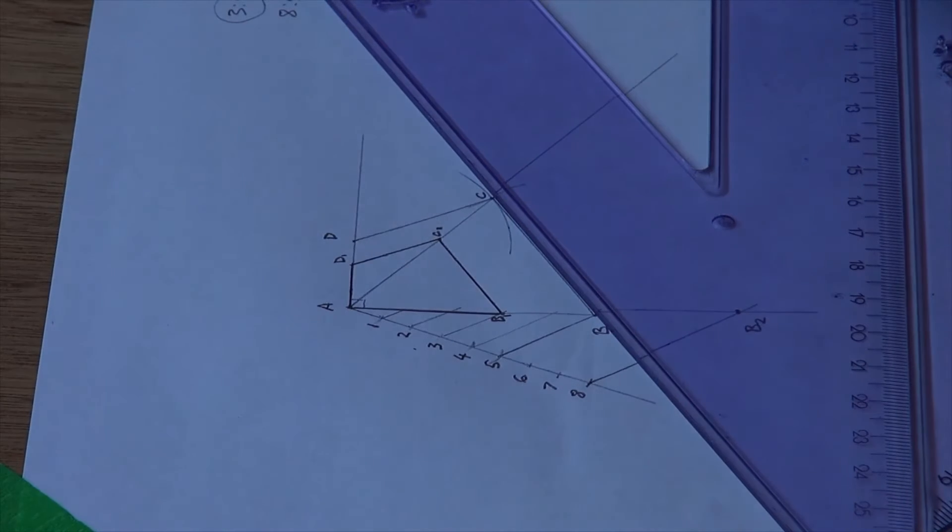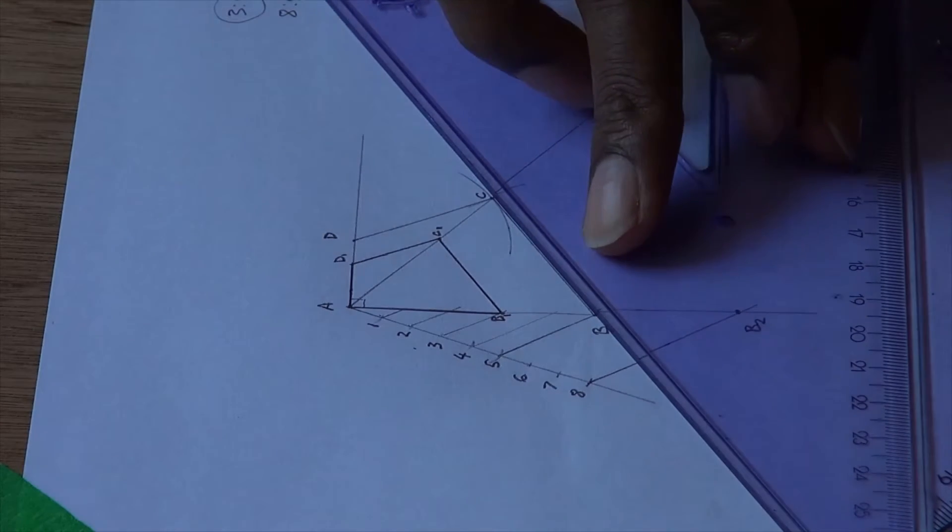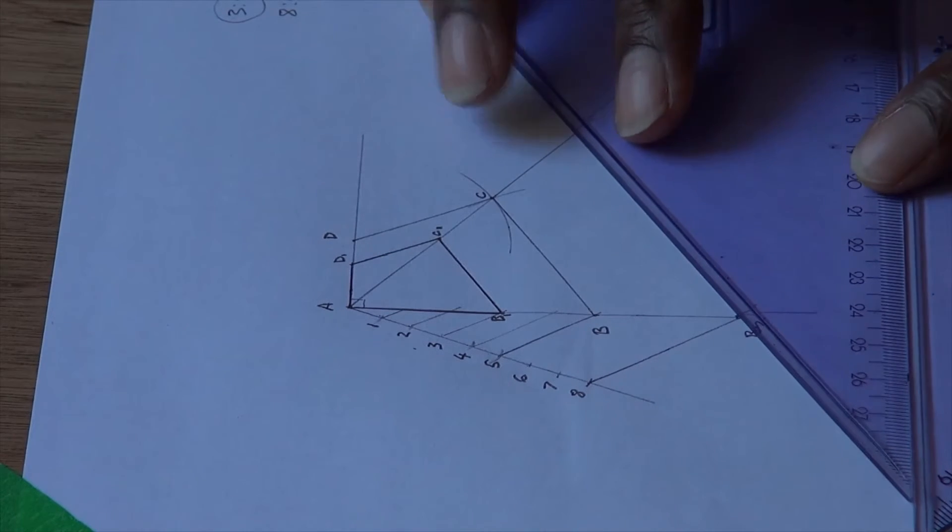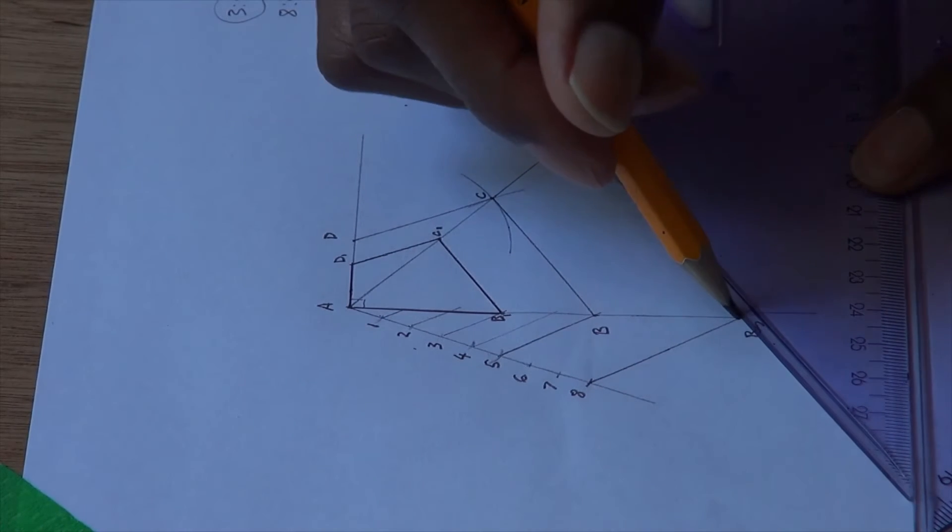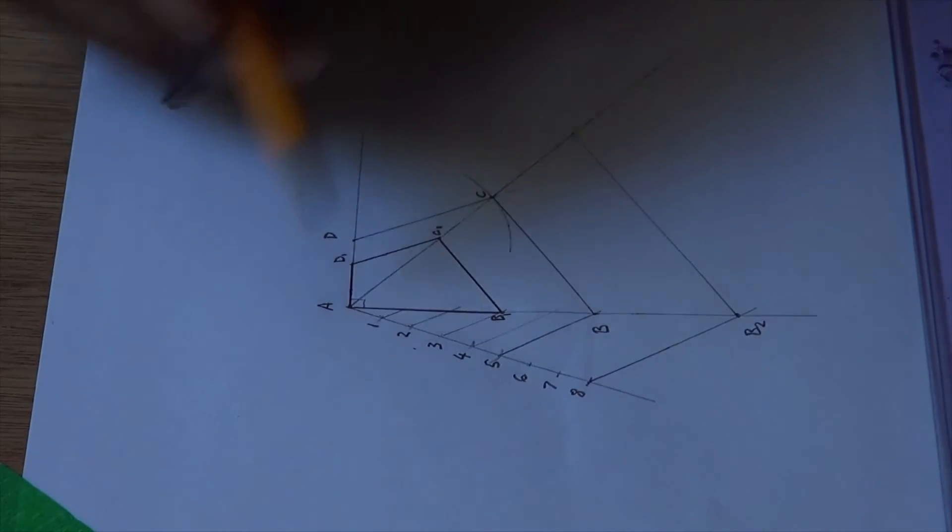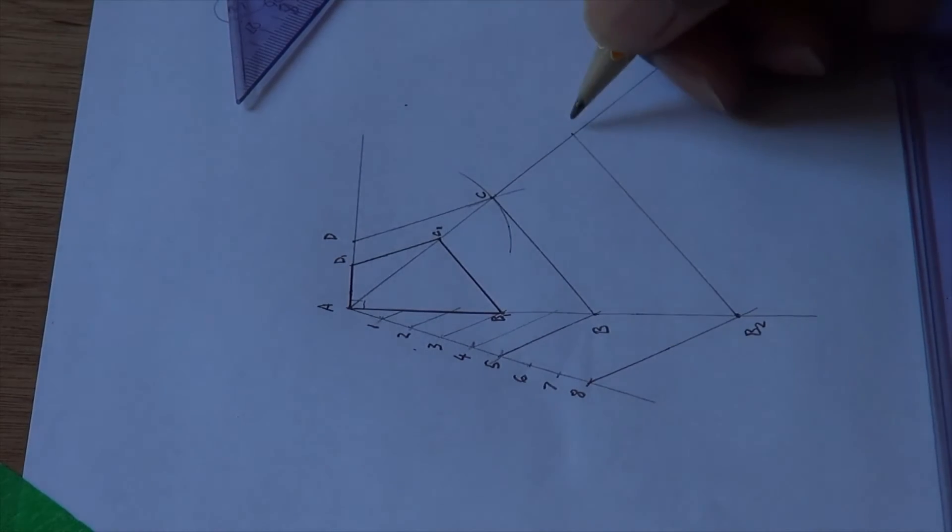Hold the second set square in place, slide the top one to the point B2, and draw a line from here touching the AC line that was extended. This point is C2.